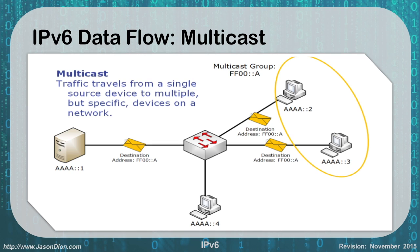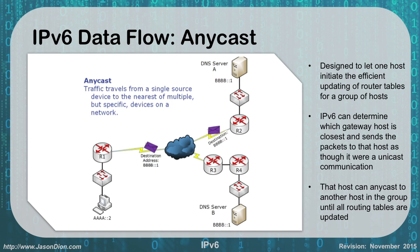The difference is the last one. What was broadcast in IPv4 is now called anycast in IPv6. Before, broadcast went to every and all devices. Now with anycast, traffic can go from a single source to the nearest of multiple devices on a network. This is designed to let the host initiate the most efficient updating of routing tables for a group of hosts. IPv6 can determine the gateway closest to the host and send the packets to that host as if it were a unicast communication. For instance, sending something to the BBB colon 1 server, it goes through the cloud, finds the closest router — in this case router 2 — and sends it upward, rather than through router 3 or router 4. That host can then anycast it to another host in the group until all routing tables are updated. This is used more for router-to-router communication than peer-to-peer.